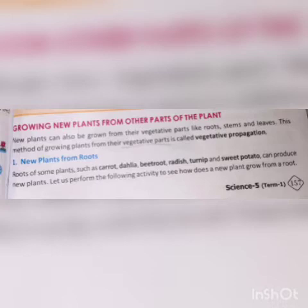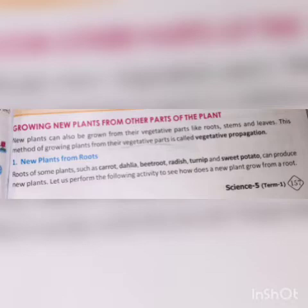New plants from roots: roots of some plants such as carrot, dahlia, beetroot, radish, turnip, and sweet potato can produce new plants. These roots, when planted, can grow into new plants.